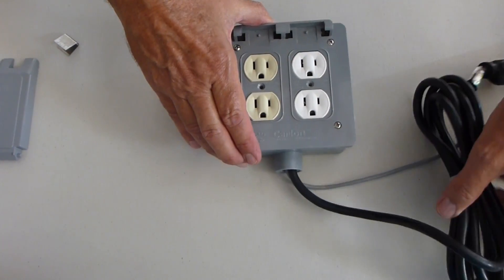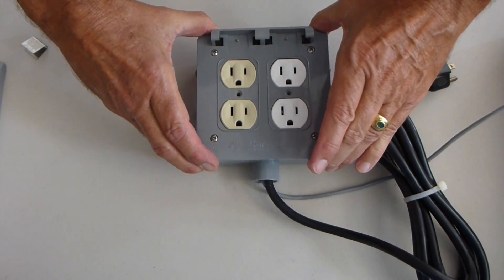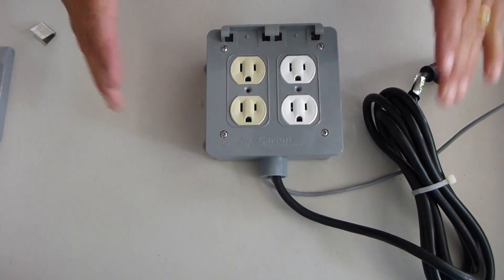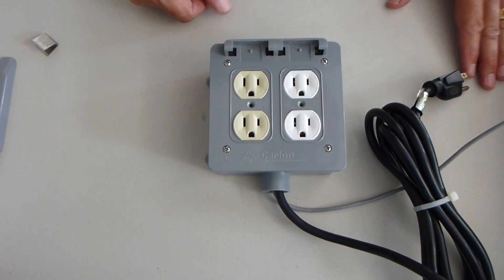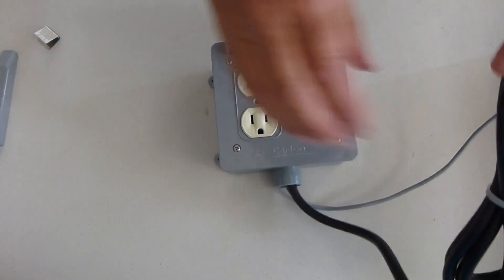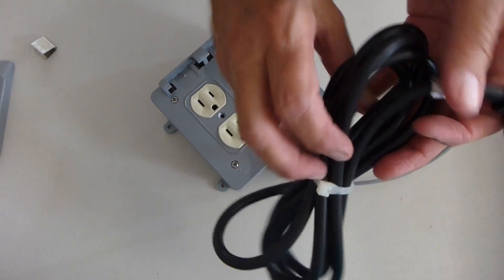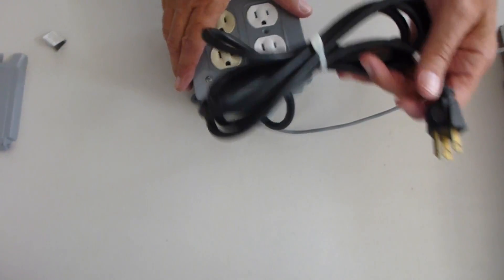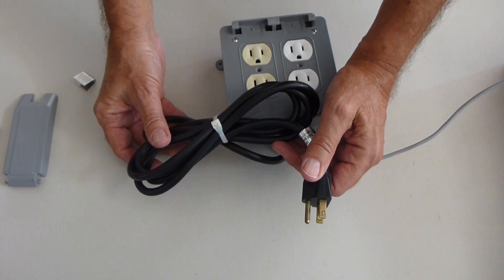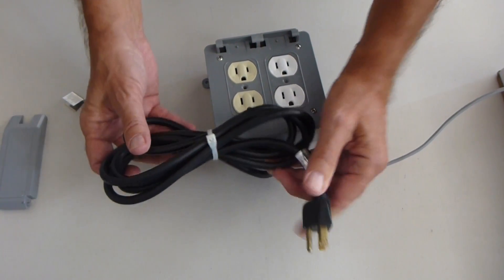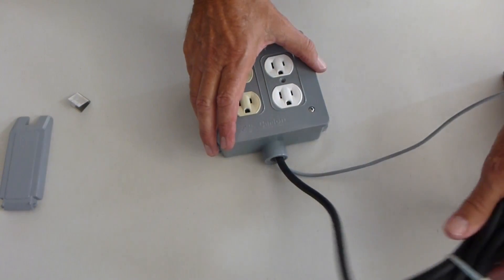What we're going to be doing is mounting our control box however we want to mount it on the wall, on a 4x4, whatever you think. Your electrical cord is approximately 8 feet long, so you can stretch it over and plug it into any grounded outlet.